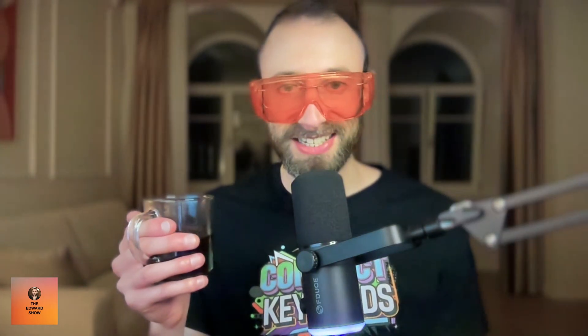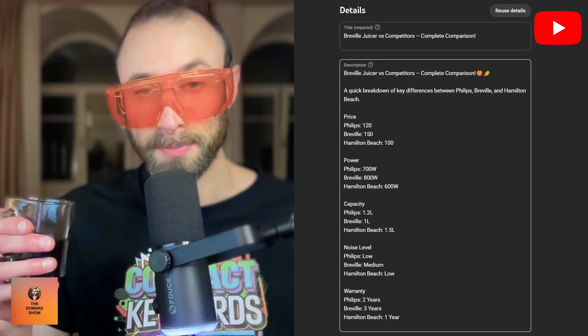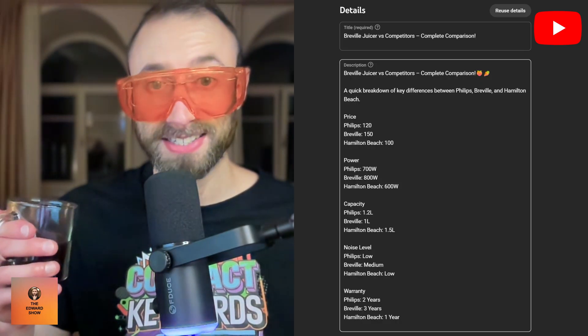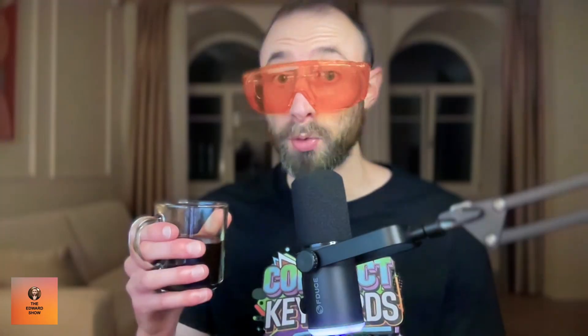That same comparison table is appearing across UGC — across Facebook, across X. The presentation might be different; it might be a list versus an actual table on the website, but all the information is the same. I see no reason why this wouldn't work. It's just a shortcut to control the narrative for people looking for what you sell, or specifically looking to see how your brand compares to other brands.